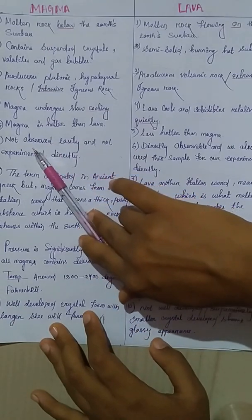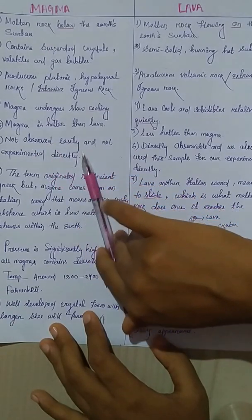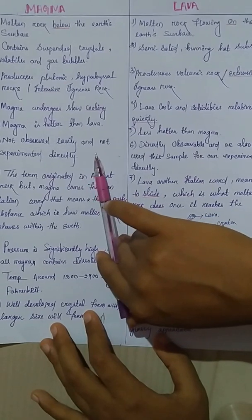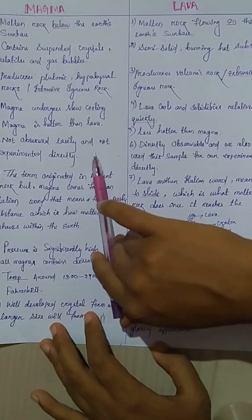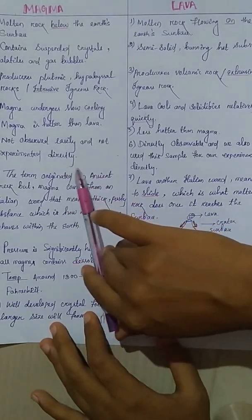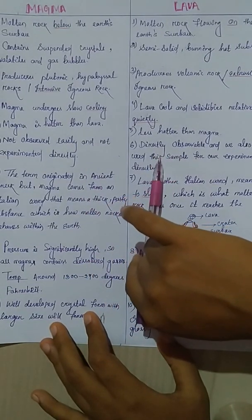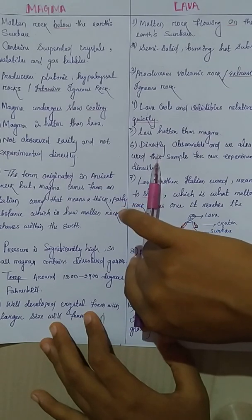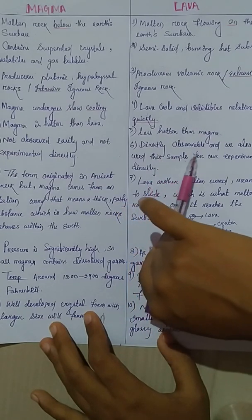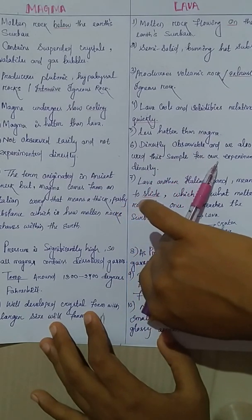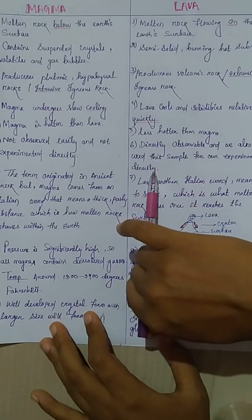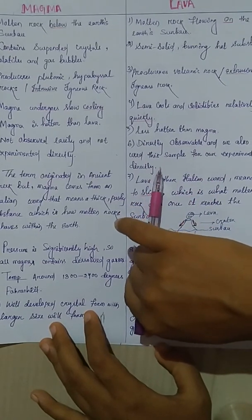Magma is not observed easily on the surface of the earth, therefore it is not experimented directly. But in case of lava, we can directly collect samples from the volcano nearby surfaces, directly observe it, and we also infer from this process of experimentation.